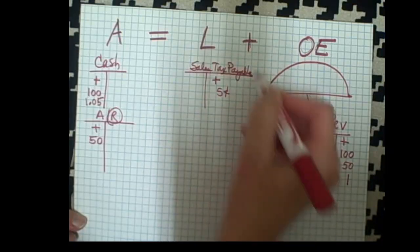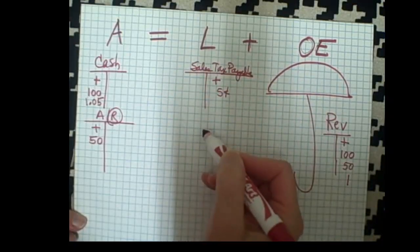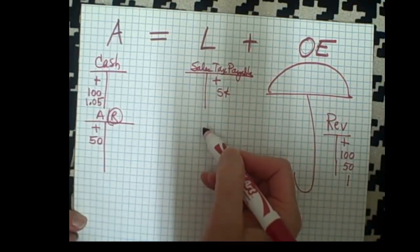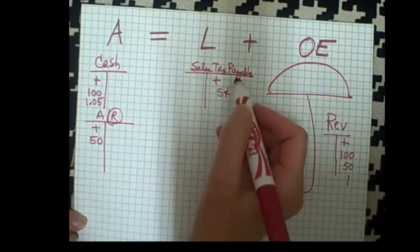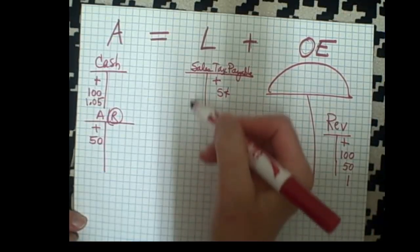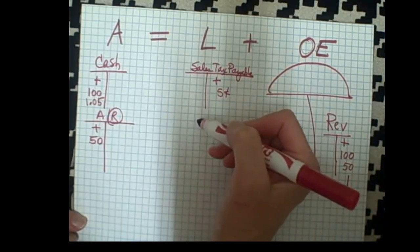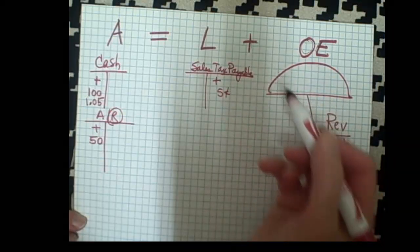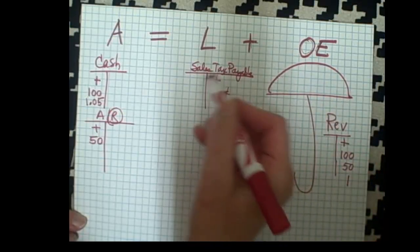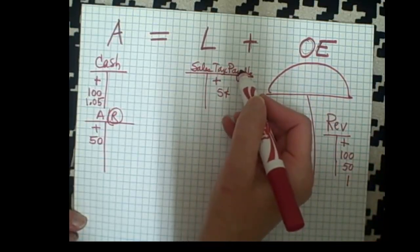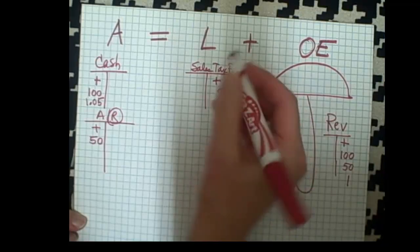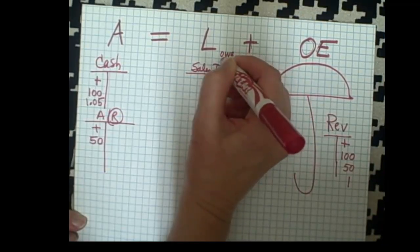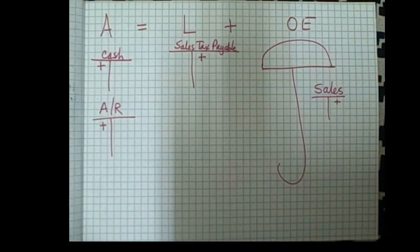So here we have two credits and one debit. This is a new liability account — sales tax payable — because when a business collects the sales tax, they have to in turn send it on. At that point, the business owes that money.